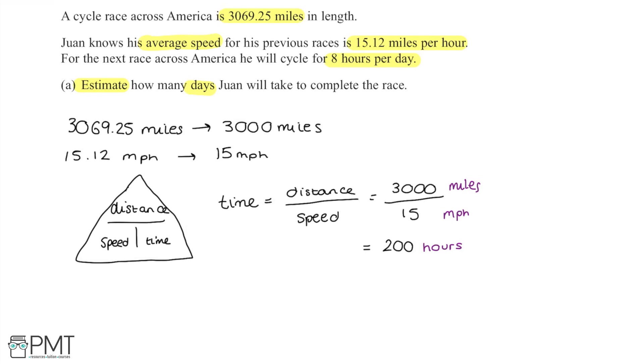We then need to work out how many days this is going to take Juan. If he is doing 8 hours of cycling per day, we can simply take this 200 and divide it by 8 to work out how many days it's going to take. So 200 divided by 8 gives us an answer of 25. So 25 days is the estimated value that it will take to complete this race.